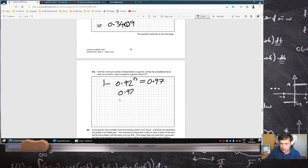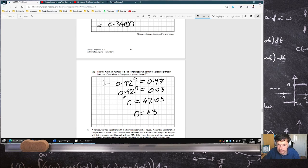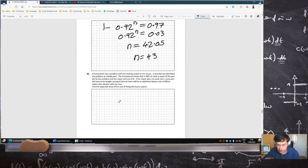0.92 power N is 0.03. So N is the log base 0.92 of 0.03. So that's 42.05. So N is 43. I just used a log there.